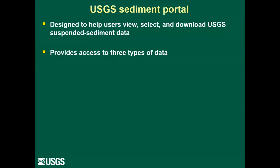Three types of data are contained within the portal. The first are discrete suspended sediment data — results from samples collected from streams or rivers at a known date and time. More than 600,000 of these samples are available within the portal. The second are mean daily estimates of suspended sediment concentration and/or load.